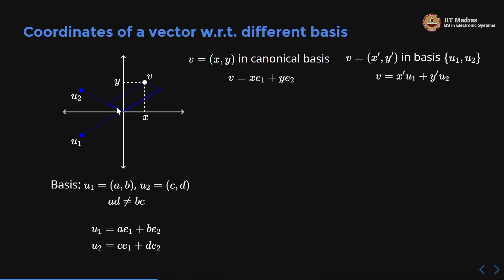To find these coordinates, you take a line along u2 and a line along u1 — these two if you add by the parallelogram law should give you v. So you write v as a linear combination of u1 and u2, scale them appropriately, and add to get v. The same vector v when written in terms of u1, u2 will be x'·u1 + y'·u2. What is the connection between (x', y') and (x, y)? This is the change of coordinates for a vector.